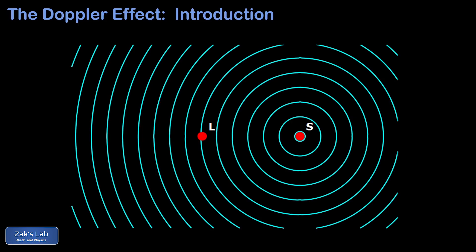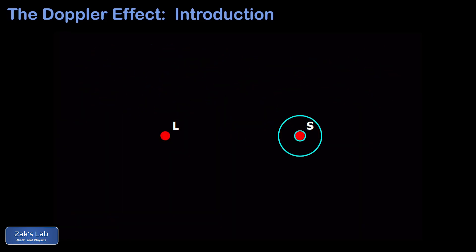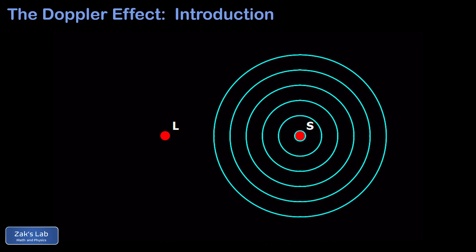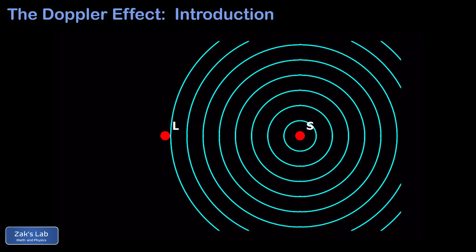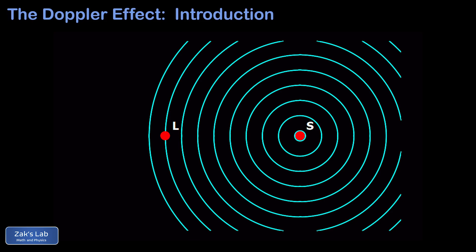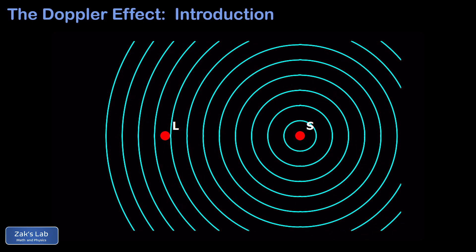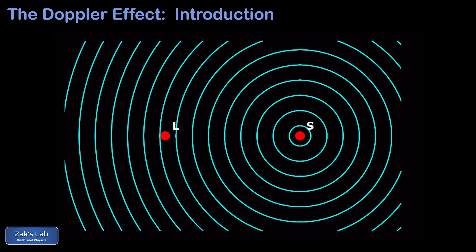We can illustrate this example with a quick schematic animation where a 400Hz sound source is stationary. We see waves radiating away from this source as concentric circles, and we see the location of a listener who is hearing the 400Hz waves as they arrive.